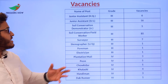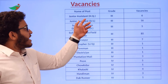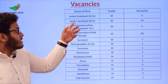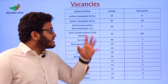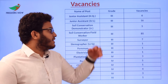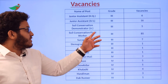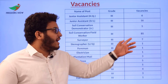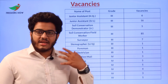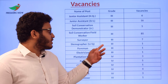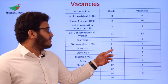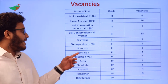Now let's see the vacancy details for each post. For Junior Assistant Headquarters Grade 3, we have 6 vacancies. Junior Assistant DL Grade 3: 16 vacancies. Soil Conservation Demonstrator Junior Grade 3: 5 vacancies. Soil Conservation Field Worker Grade 3: 85 vacancies. Surveyor Grade 3: 7 vacancies. Stenographer Grade 3: 1 vacancy. Foreman Grade 3: 1 vacancy.